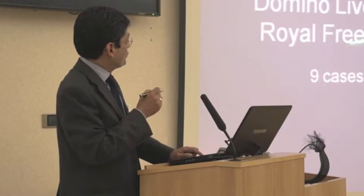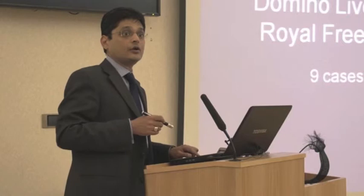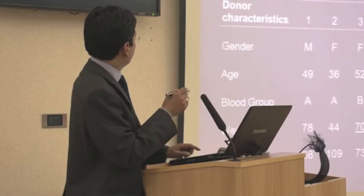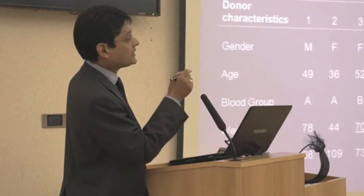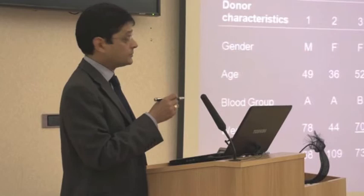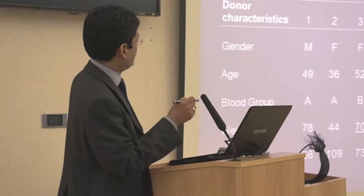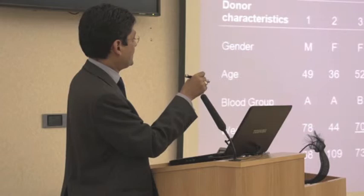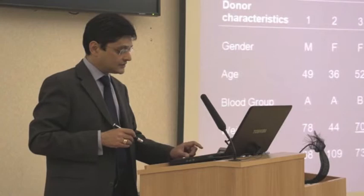I'm going to show the results of the nine domino transplants done at the Royal Free Hospital between 2006 and 2012. Looking at the characteristics of the domino donors — the patients with FAP who received a transplant and then donated their liver — there were nine patients, five from the Royal Free Hospital and two from King's College Hospital in South London. All were relatively young with a median age of 38 years, a median weight of 70 kilograms, and a median time on the waiting list of 196 days, a little over six months.